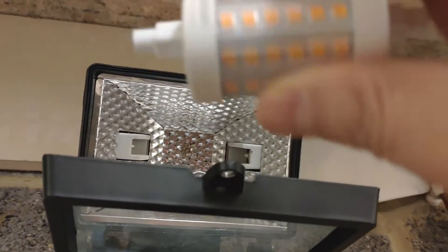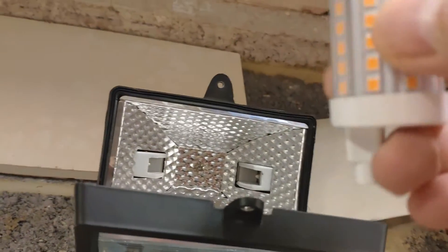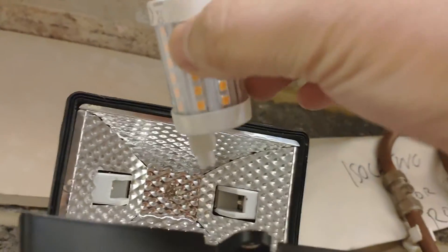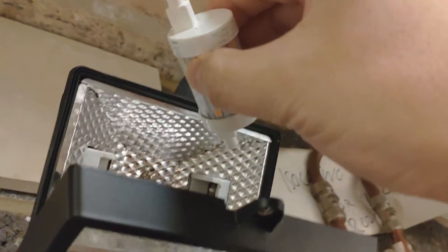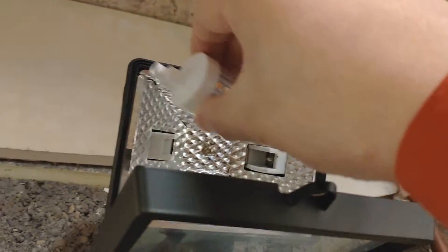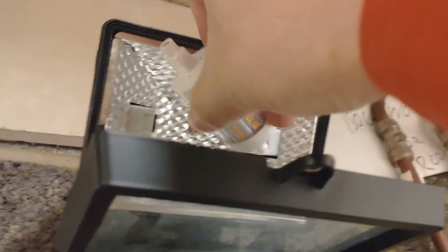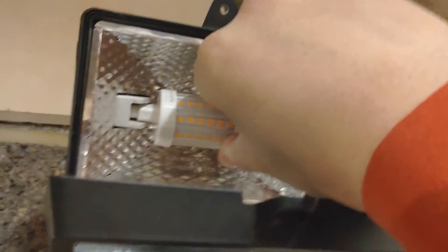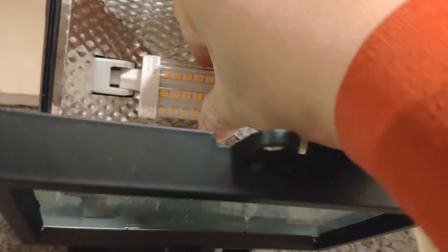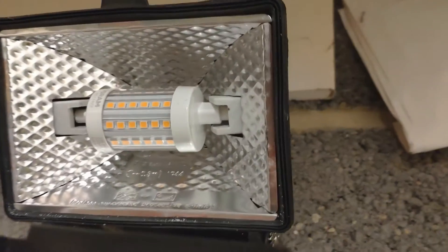Installing the new bulb is as easy as removing the old one. Push the bulb aside and slide in. Make sure the bulb is fully fitted on both sides.